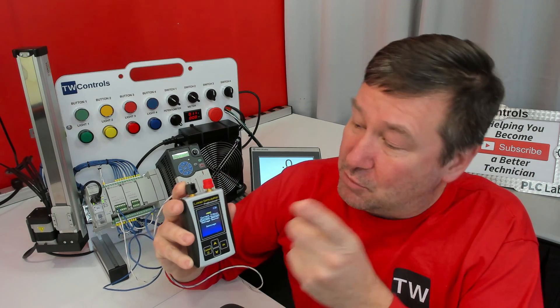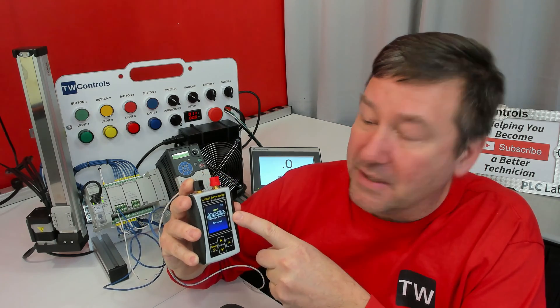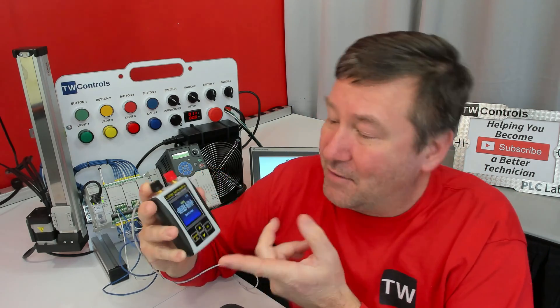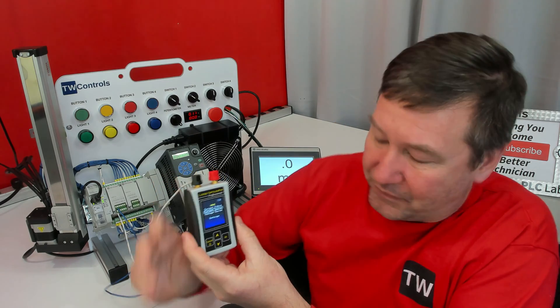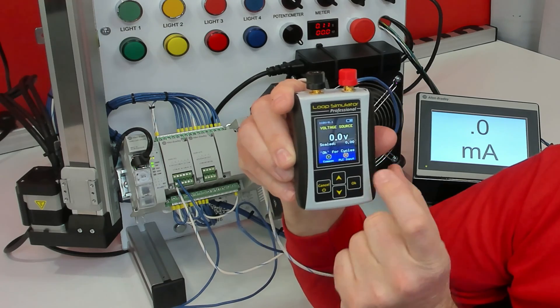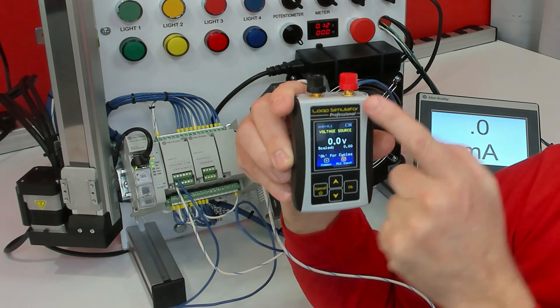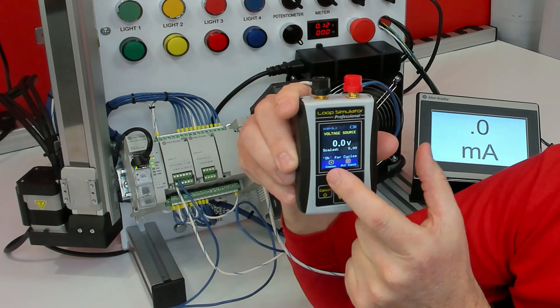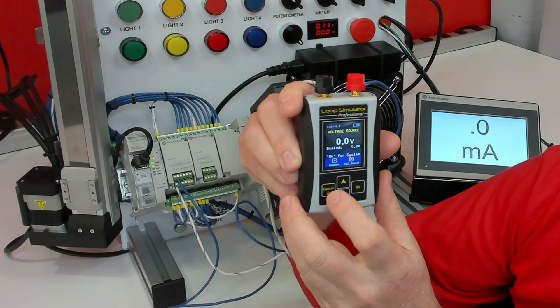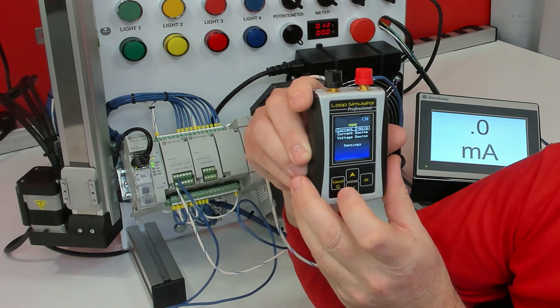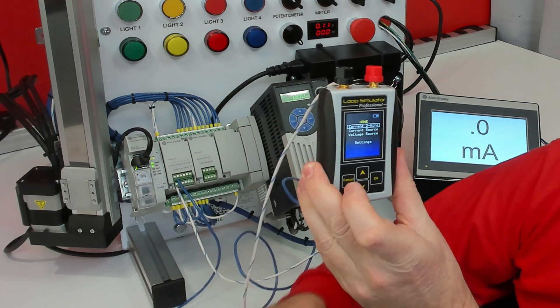First, we have three modes: current two-wire, current source, and voltage source. The voltage source is pretty simple - 0 to 10 volts. If we select it, then at the bottom it's going to tell us that our input is going to be our red post and our common is going to be the black post. And you're going to see similar terminal assignments for current source and current two-wire.